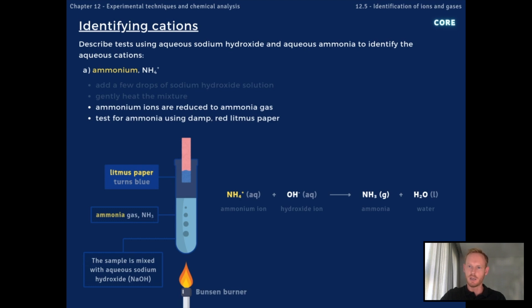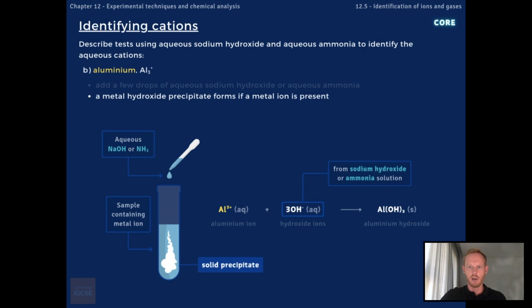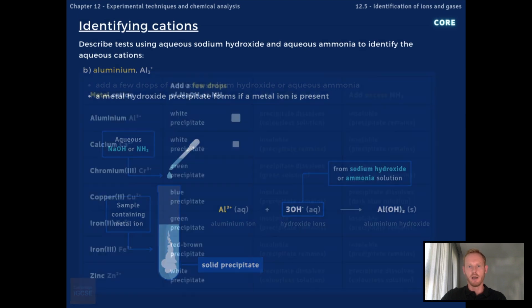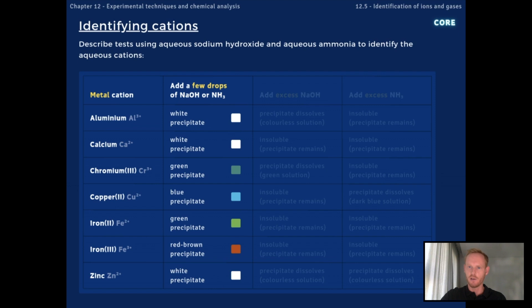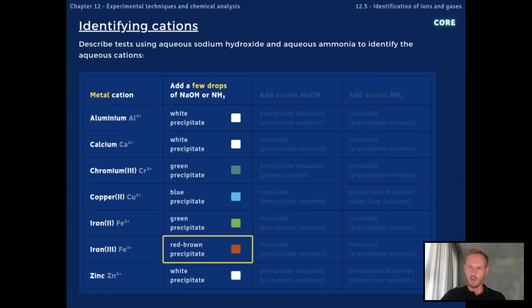To test for the presence of a given metal ion, simply add 2–3 drops of aqueous sodium hydroxide or aqueous ammonia to the sample. Metal cations react with hydroxide anions to form insoluble metal hydroxide precipitates. The colour of the precipitate depends on the specific metal ion: calcium ions produce a white precipitate, copper 2 ions produce a blue precipitate, and iron 3 ions produce a brown precipitate.